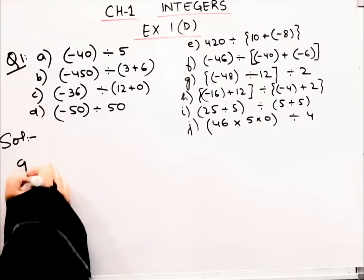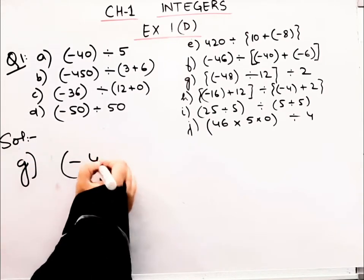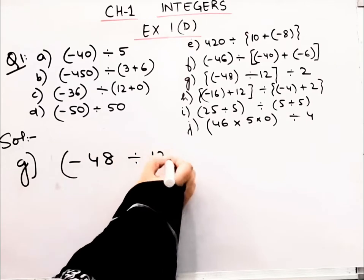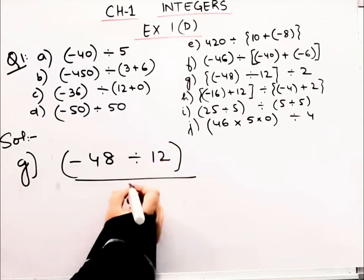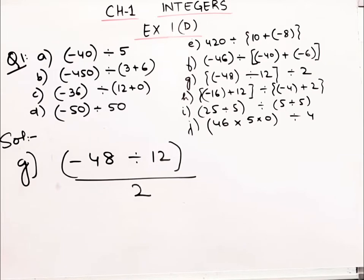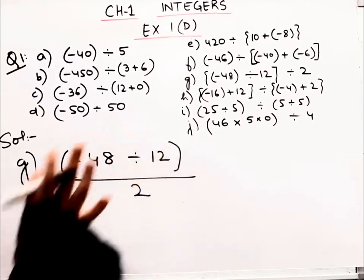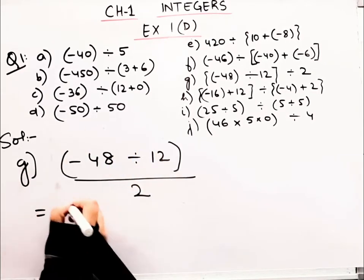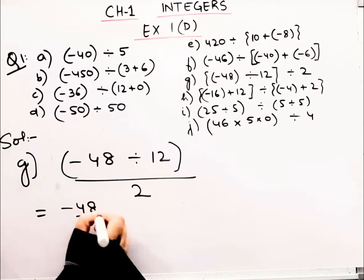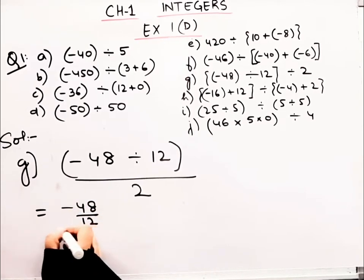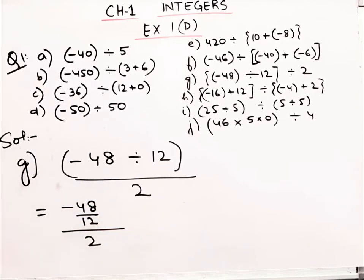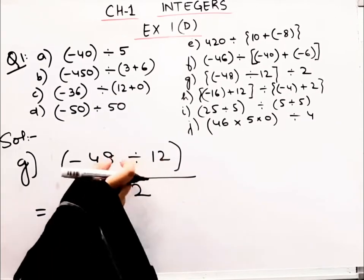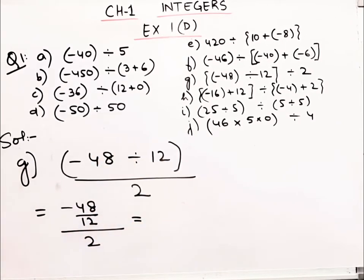Now let's do the part (g). Here we have minus 48 divided by 12, total divided by 2. Let's solve the top first. Minus 48 divided by 12. I wrote this thing like this. So tell me how it will happen. The answer is minus 4 divided by 2, which equals minus 2.